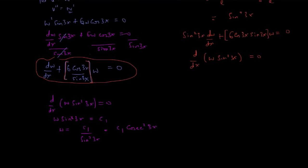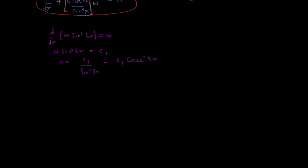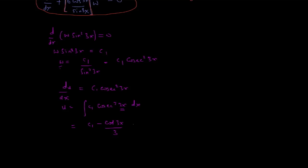Our aim is not to find w but to find u, and since w = u', we write u' = c1·cosec²(3x). Integrating, u = c1·∫cosec²(3x) dx = c1·(−cot(3x)/3) + c2, so u = −(c1/3)·cot(3x) + c2.